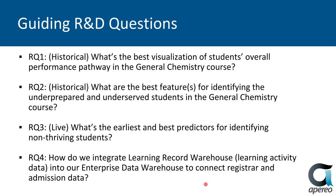These are some of the guiding research questions we're looking at. We're looking at historical data: What's the best visualization of students' overall performance pathway in general chemistry? Second, what are the best features for identifying the underprepared and underserved students in general chemistry? Question three, what's the earliest and best predictor for identifying non-thriving students so that we can intervene early during their actual participation?